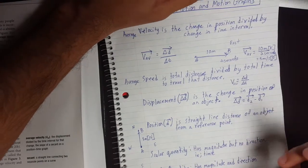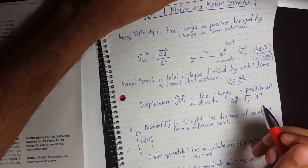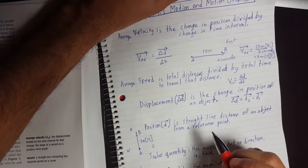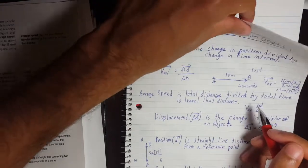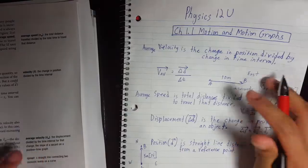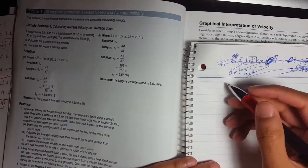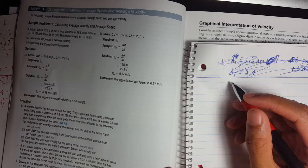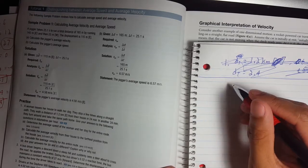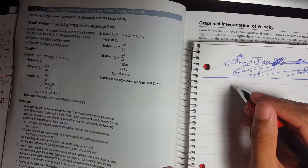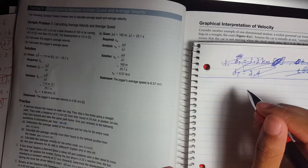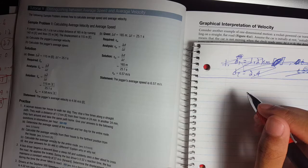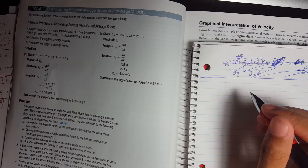It does get a little more complicated in the questions going forward, but once you get these basic concepts, you'll find the questions easier. Let's try a couple of questions. A woman leaves her house to walk her dog. They walk a distance of 1.2 kilometers east from their house in 24 minutes, then walk back in 24 minutes along the same path. Give answers in kilometers per hour. Part A: determine the average speed for the entire route.